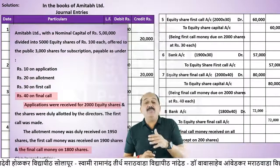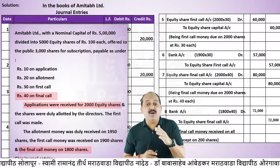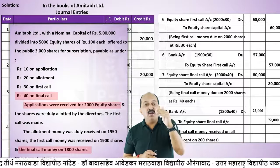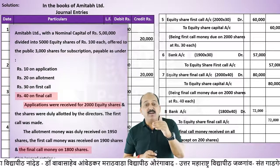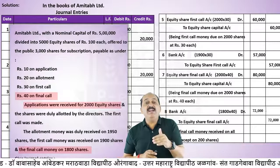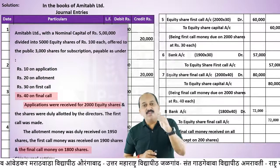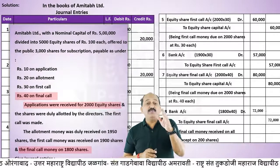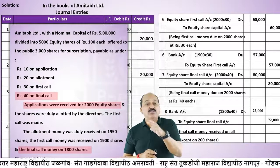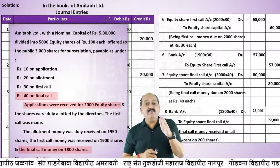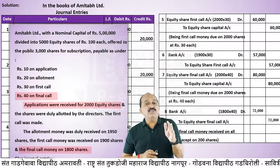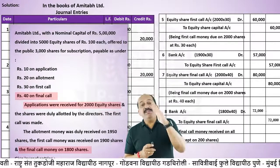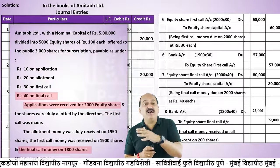तो बच्चों यह पहला problem था - practice problem number one - बहुत ही आसान। खाली application money, allotment money, first call money, final call money की details यहाँ मिले थे, और उन सबकी हमने पूरी entries की हैं। यह practice problem number one का solution हमने बना दिया - requirement खाली journal entries बनानी की थी।